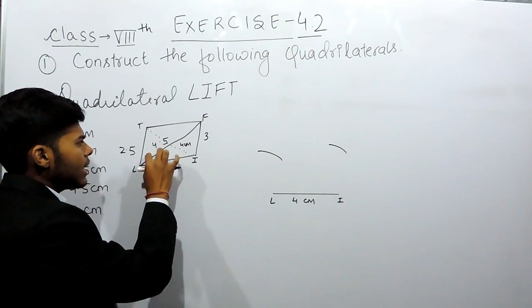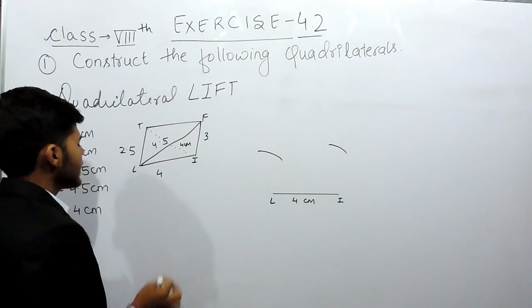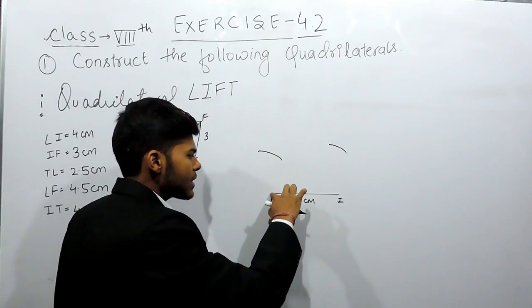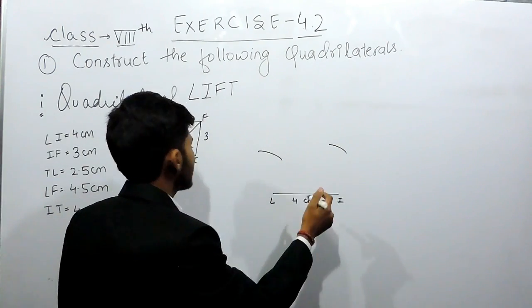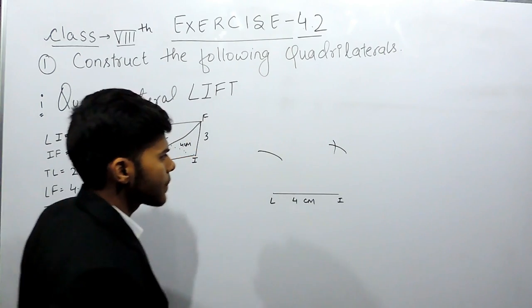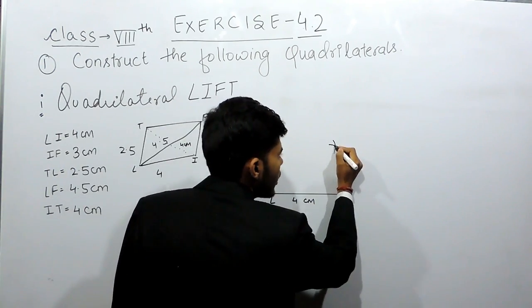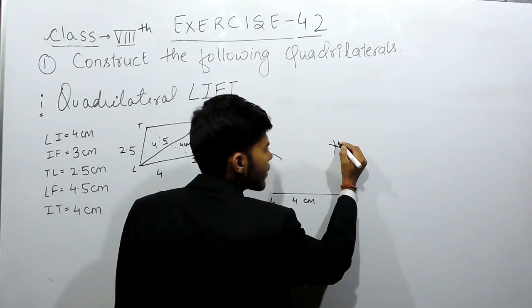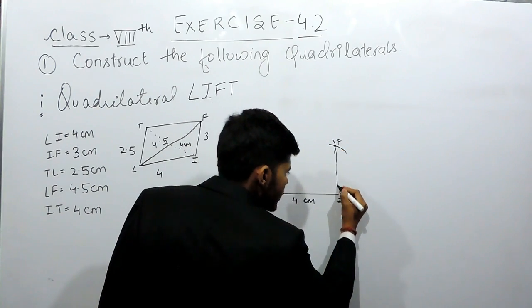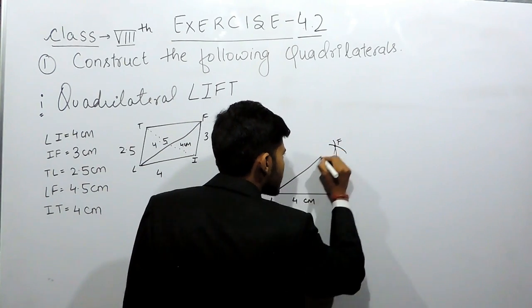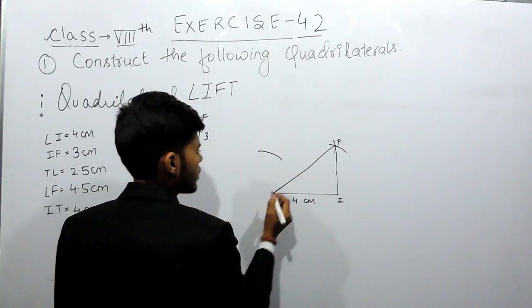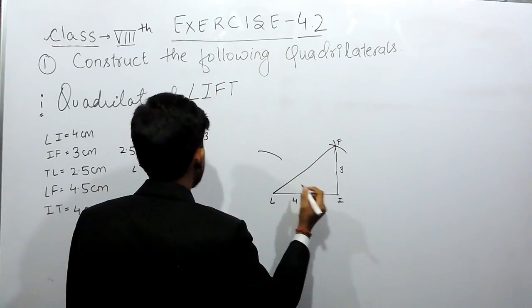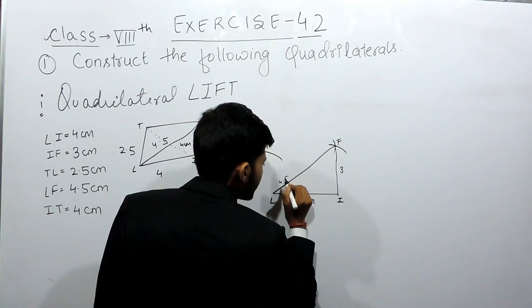Now this length is 4.5 cm, that is LF. So we will join this and we will join this point. We will get this is 3 cm and this is 4.5 cm.